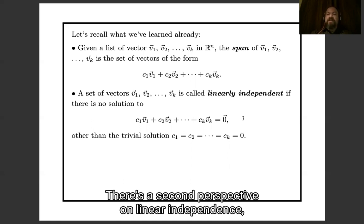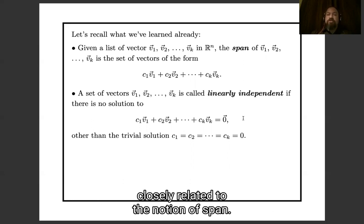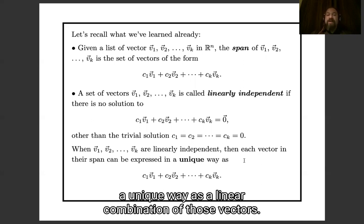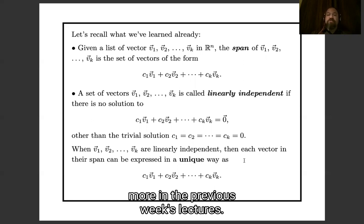There's a second perspective on linear independence which maybe makes it seem more closely related to the notion of span. When the vectors are linearly independent then each vector in their span can be expressed in a unique way as a linear combination of those vectors. So we talked about this more in the previous week's lectures.